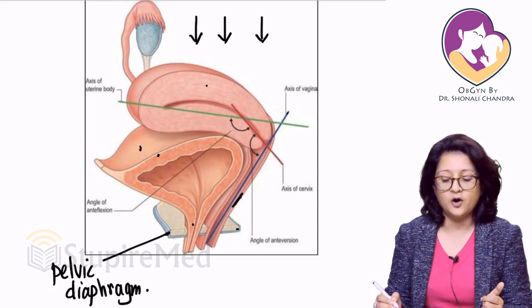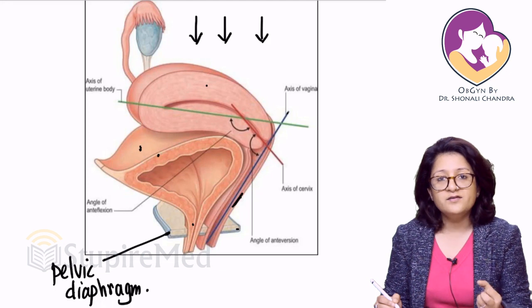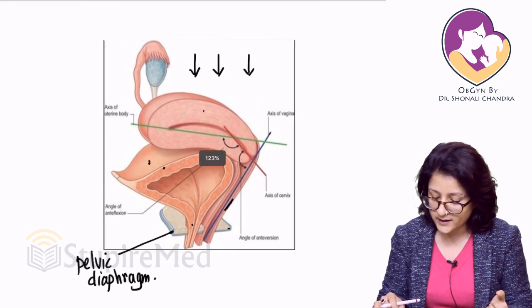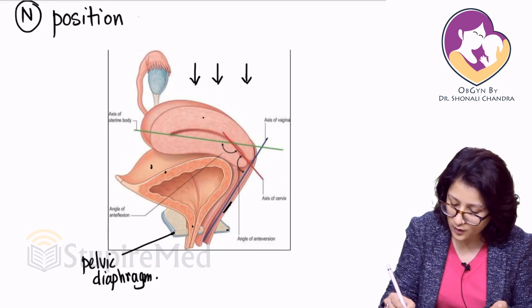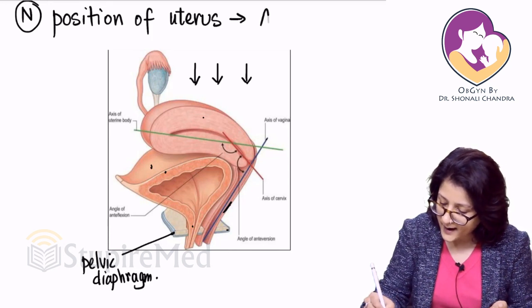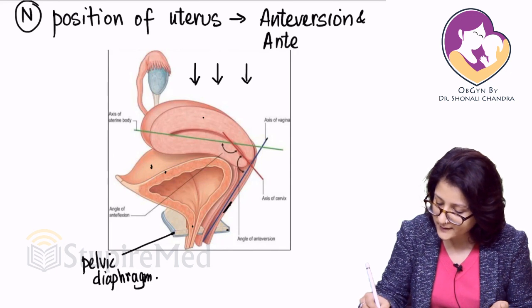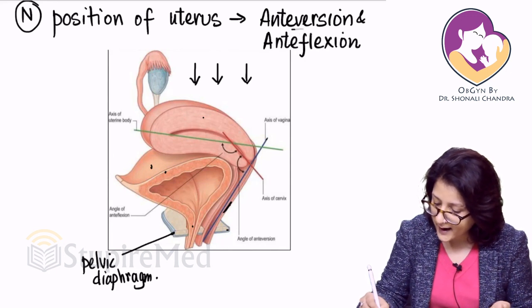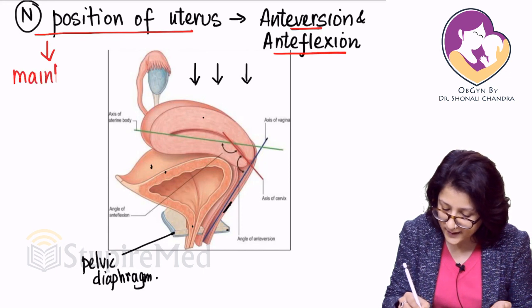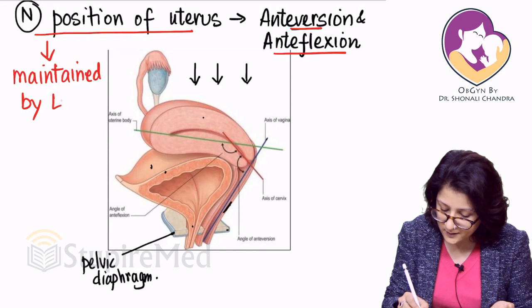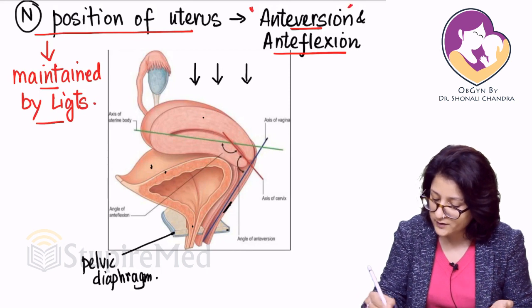The position of the vagina and the uterus is very important. The normal position of the uterus is that of anteversion and anteflexion. This normal position is maintained by the ligaments.